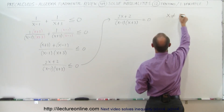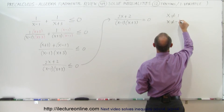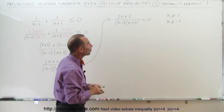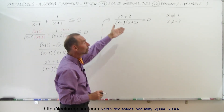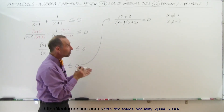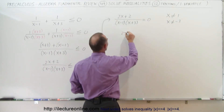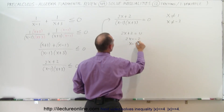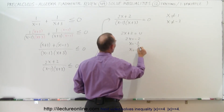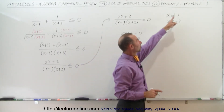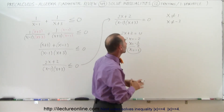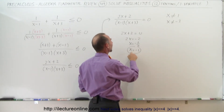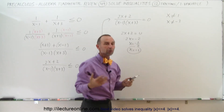So x cannot equal 1, and x cannot equal negative 3. Those become two of the critical points on the number line. The third one is when the fraction equals zero, which means the numerator equals zero. Taking 2x plus 2 and setting it equal to zero: 2x equals negative 2, so x equals negative 1. That's the third critical point. The two values 1 and negative 3 come from the zero denominator condition, and x equals negative 1 makes the numerator equal to zero.